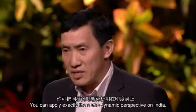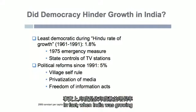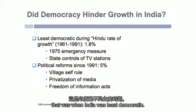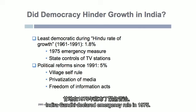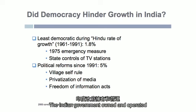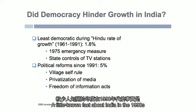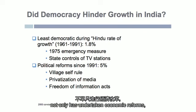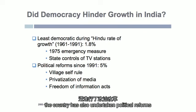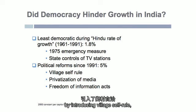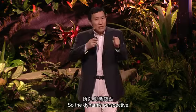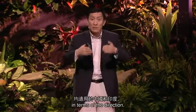You can apply exactly the same dynamic perspective to India. When India was growing at the so-called Hindu rate of growth — about 1-2% per year — that was when India was least democratic. Indira Gandhi declared emergency rule in 1975, and the government owned and operated all TV stations. A little-known fact about India in the 1990s is that the country undertook not only economic reforms but also political reforms — introducing village self-rule, privatization of media, and freedom of information acts. The dynamic perspective fits both China and India.